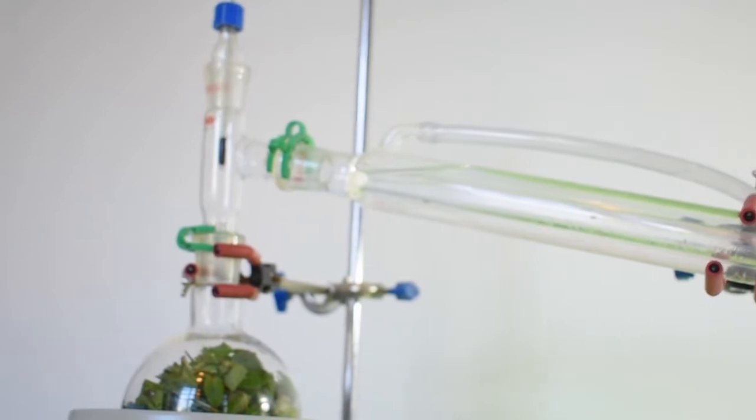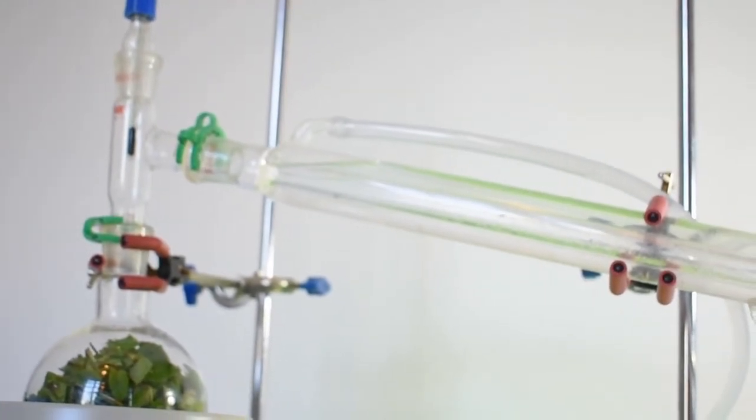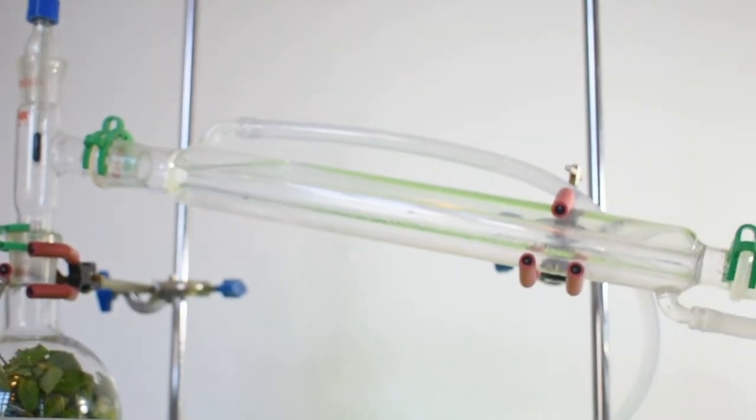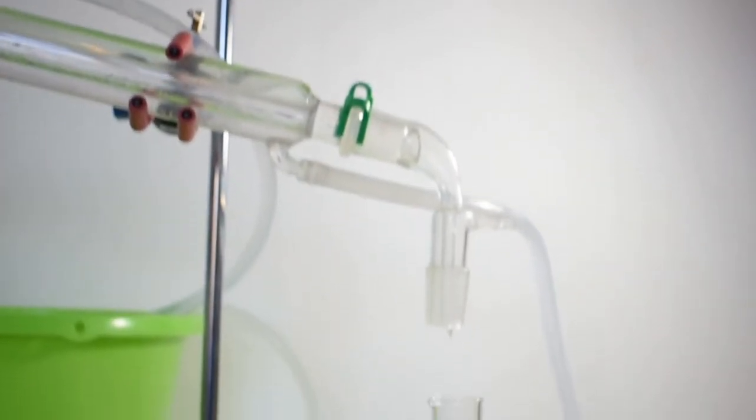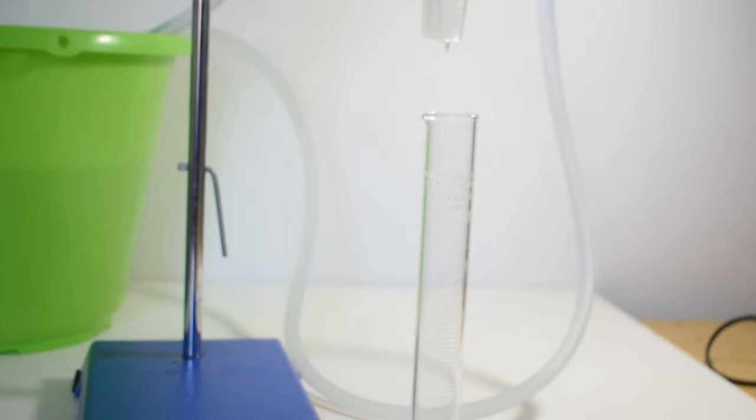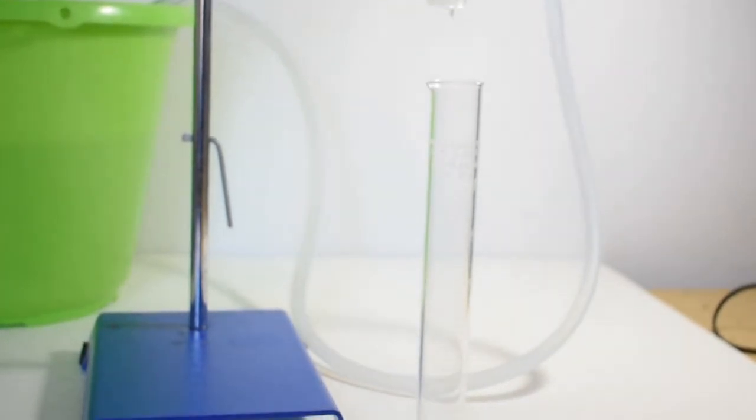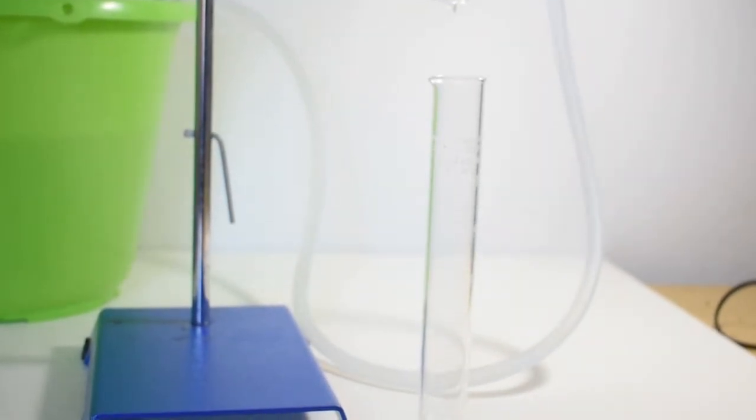The vapors will then travel into this condenser, then run along the condenser into this vacuum adapter and drip down into a measuring cylinder where we can collect the distillate in measured volumes.